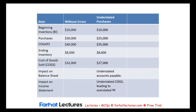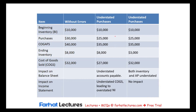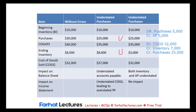Now let's make a different assumption: purchases are also understated by $5,000, but here the ending inventory is also understated by $5,000. The impact on the balance sheet would be the understatement of both inventory and accounts payable, because the journal entry — debit to purchases, credit to accounts payable — was not made. However, there is no effect on the income statement, no effect on the cost of goods sold, because inventory was incorrectly credited for $7,000 instead of $2,000, and purchases should have been credited for $30,000 instead of $25,000 — plus 5 and minus 5, netting to zero effect.